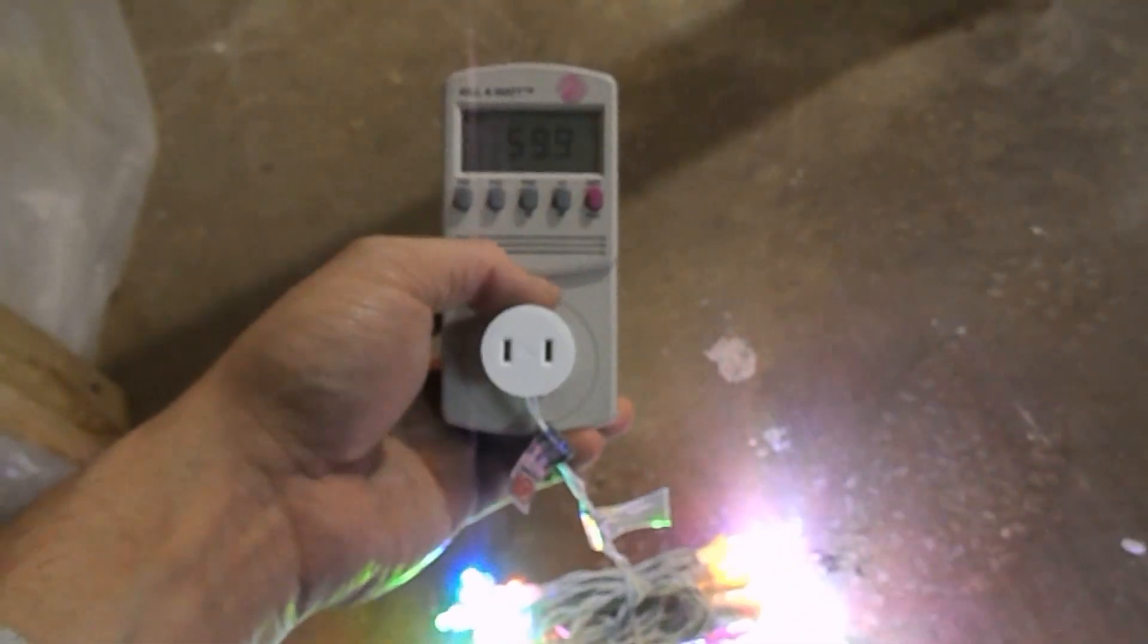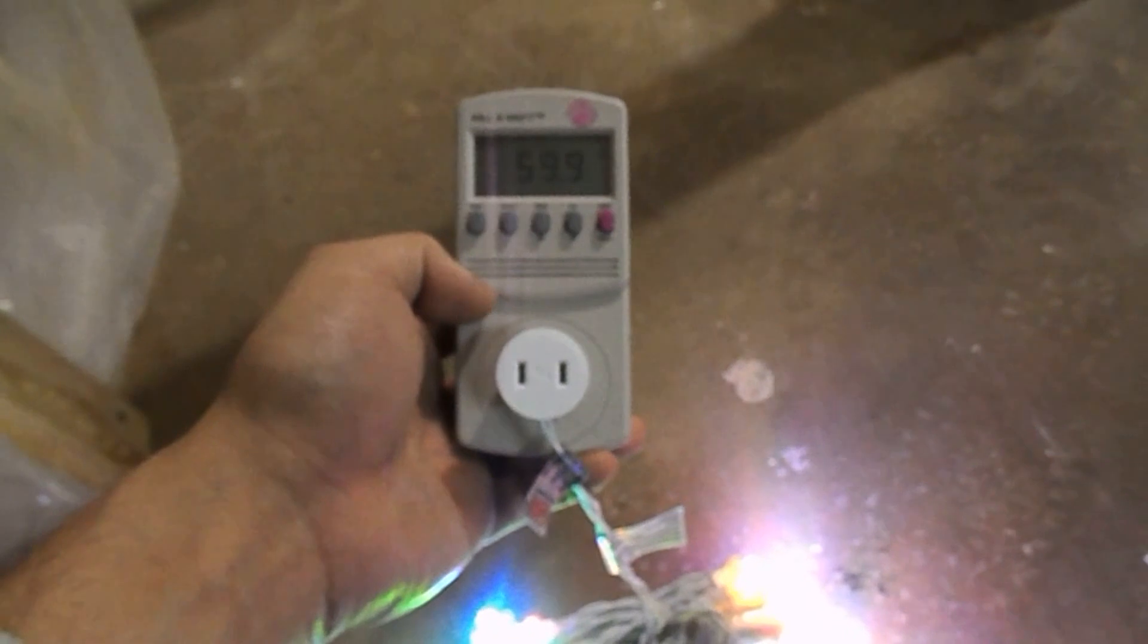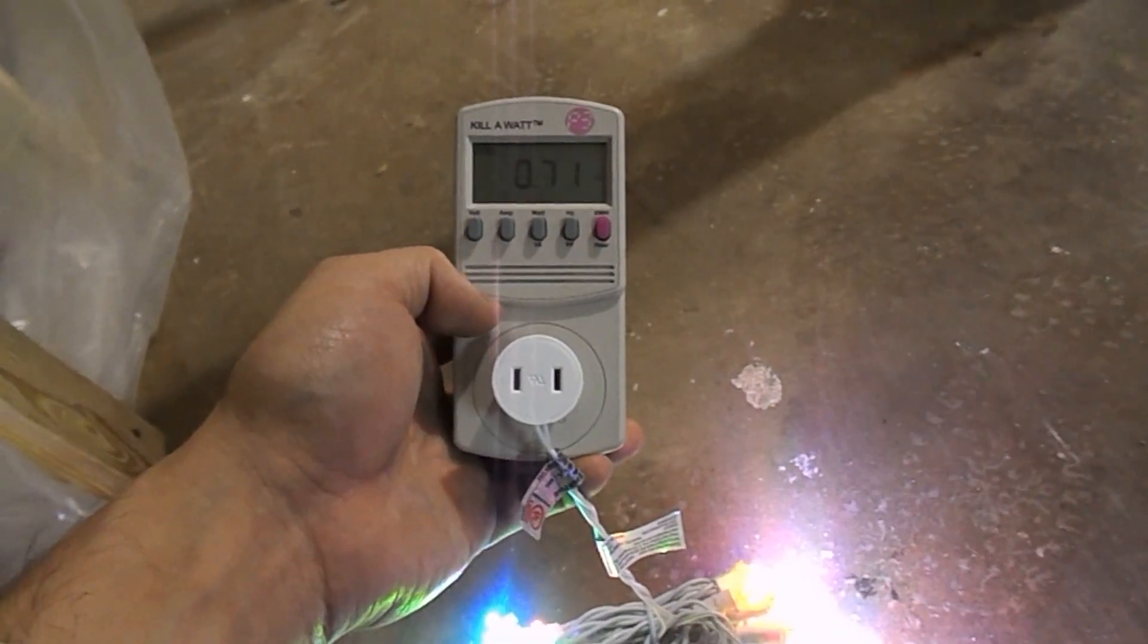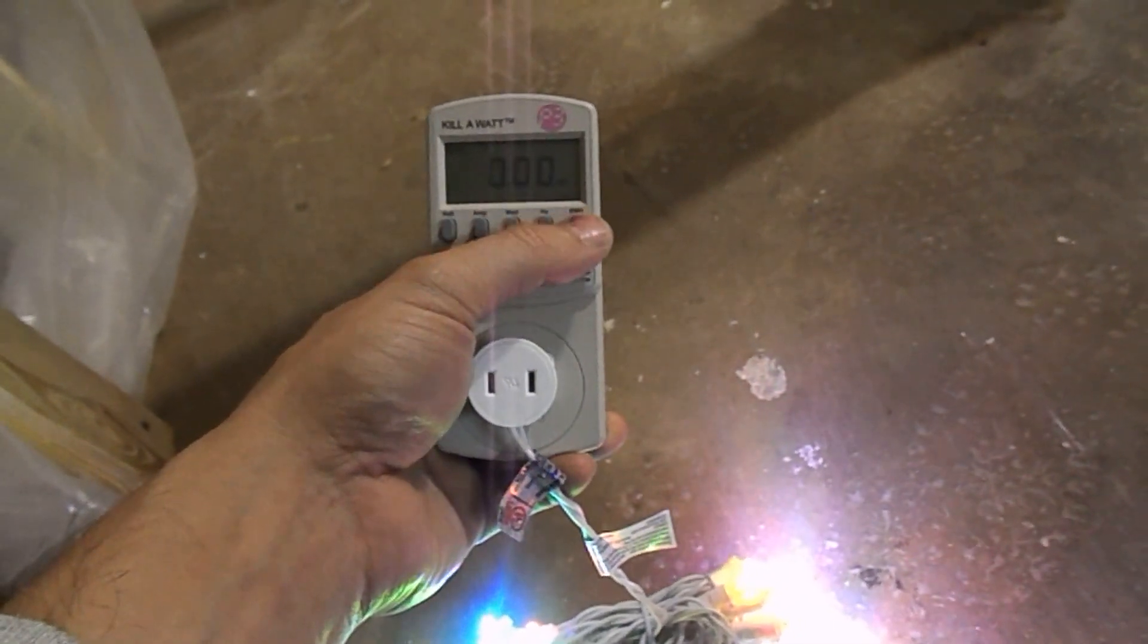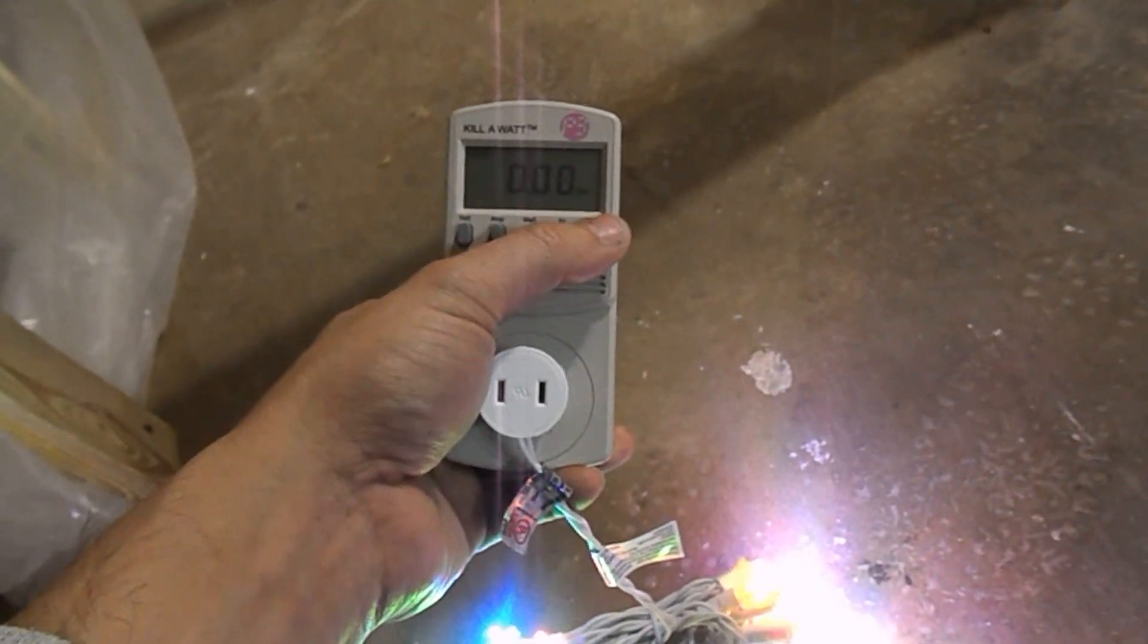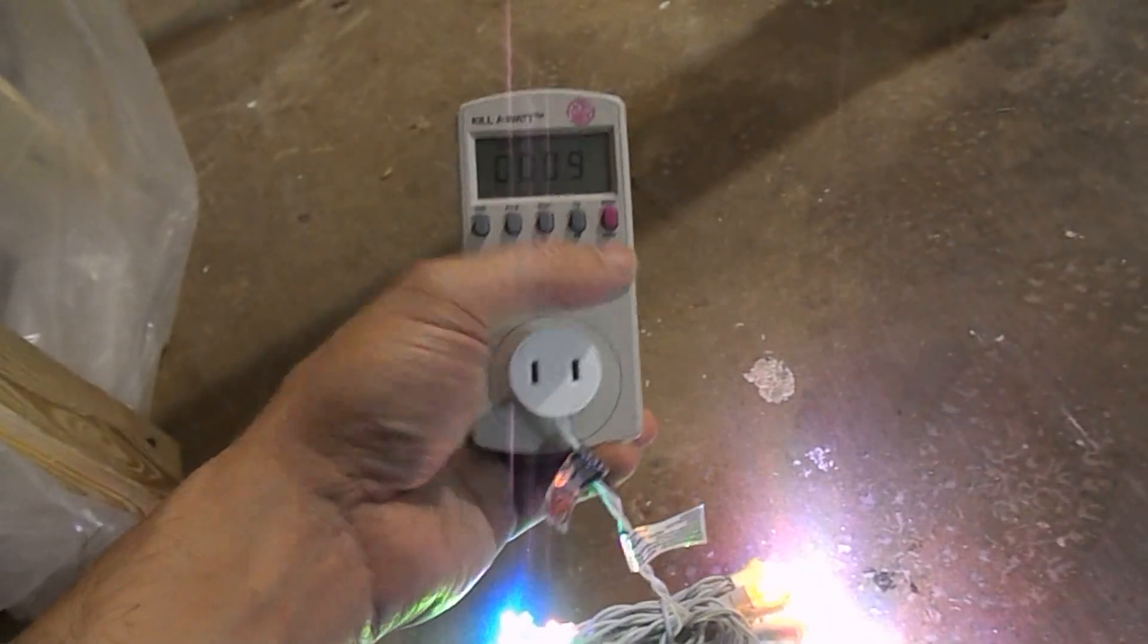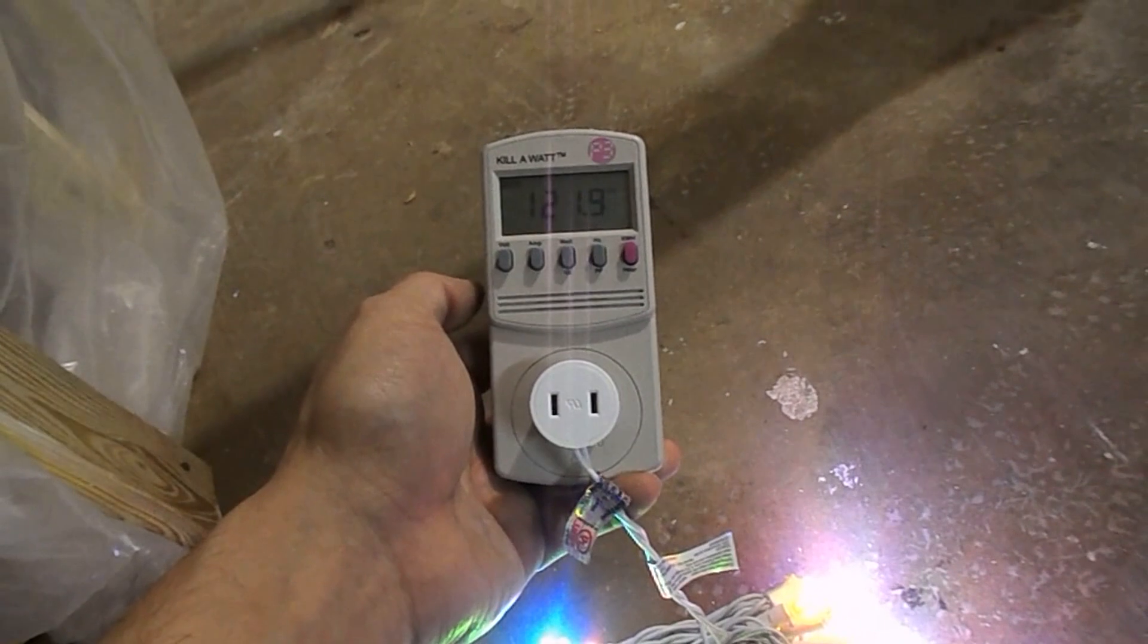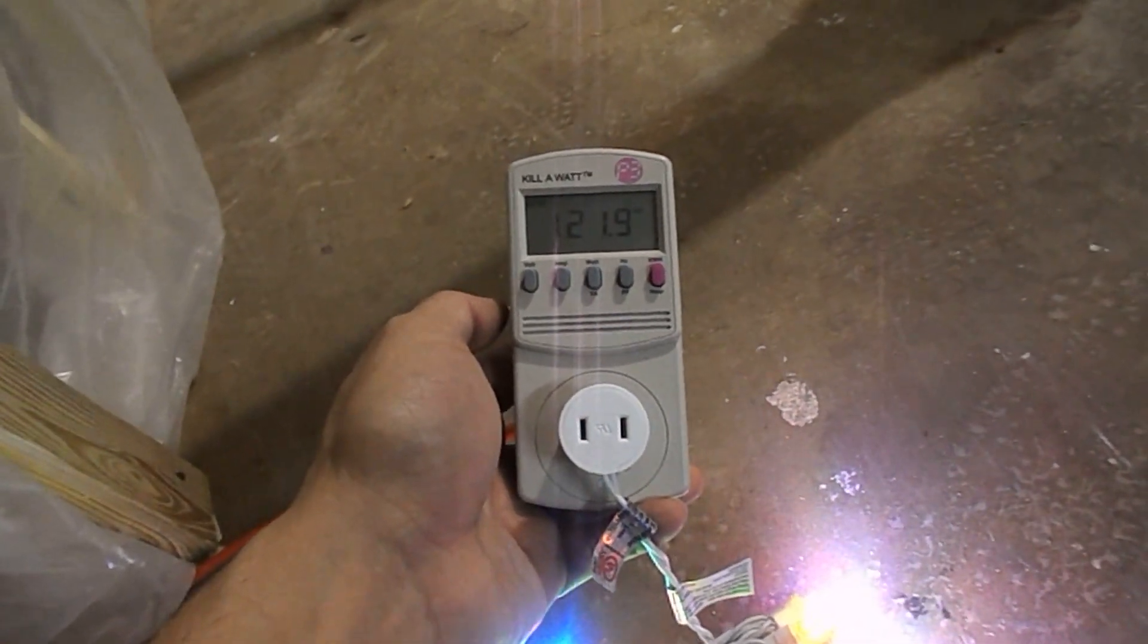And we can check frequency on this. The shown frequency is 59.9, power factor of 0.71, and kilowatt hours. Time been on for about nine minutes, voltage is 121.9 here.